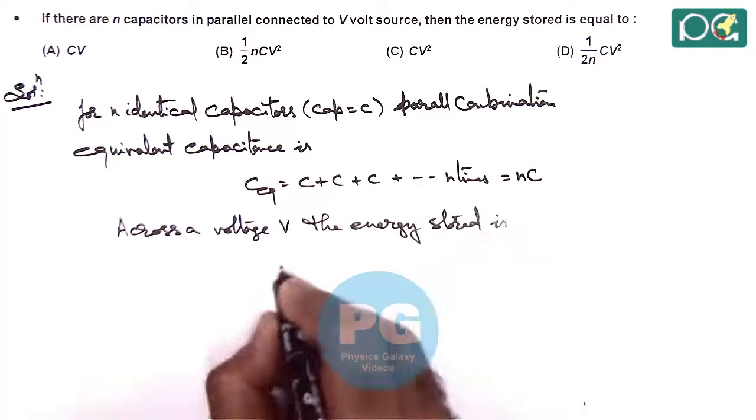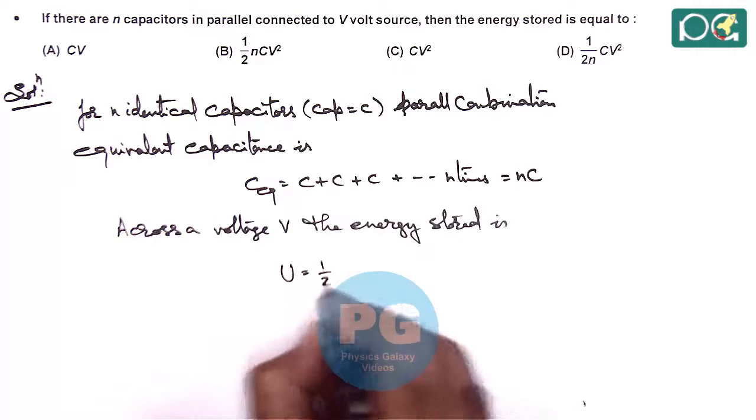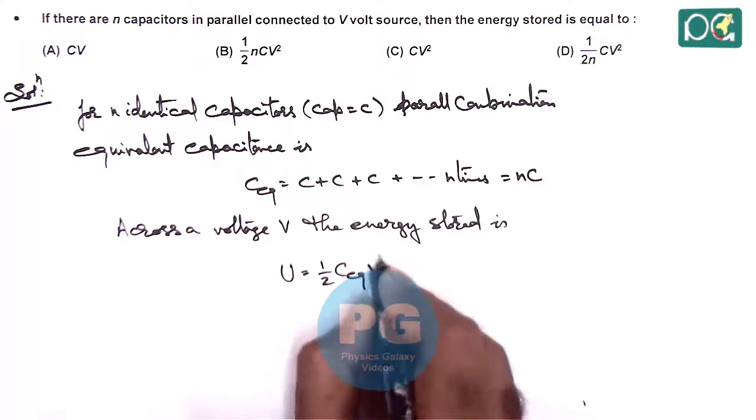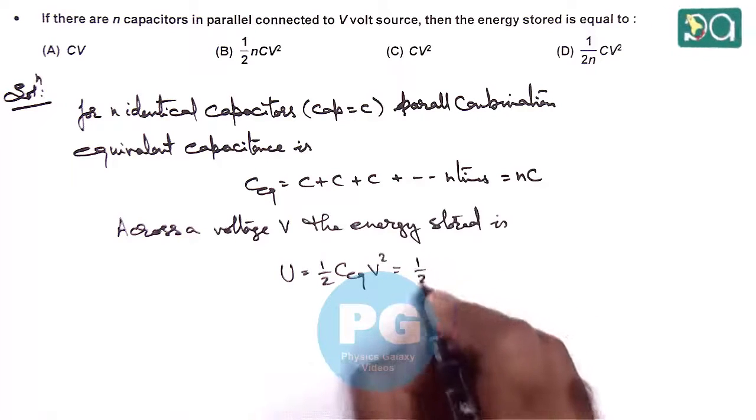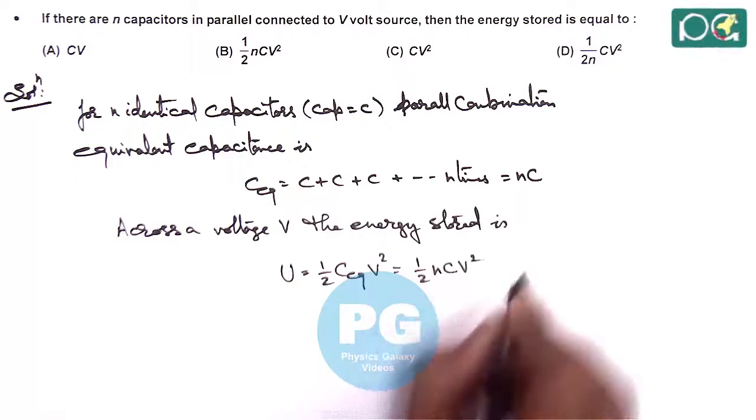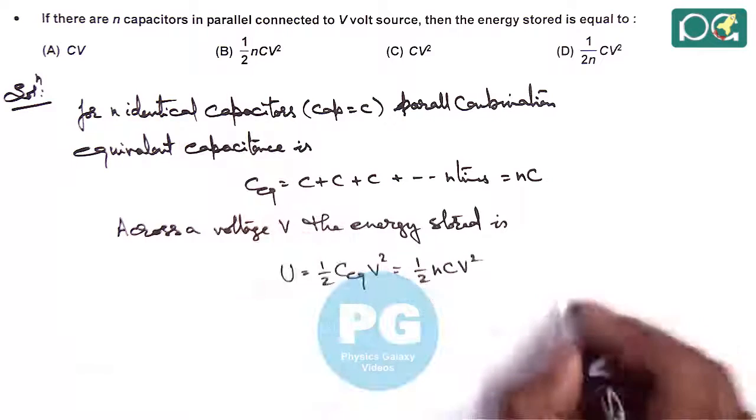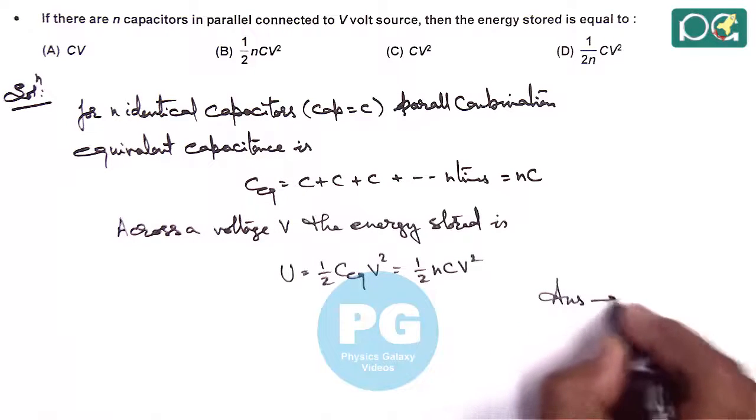This now can be directly given as half C equivalent V squared. So this will be half NC V squared. We just have a look here, the answer to this question is option B.